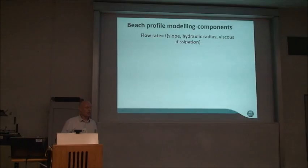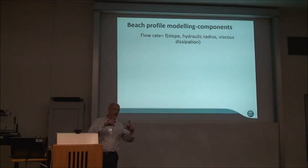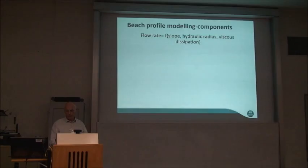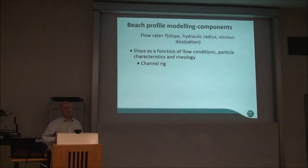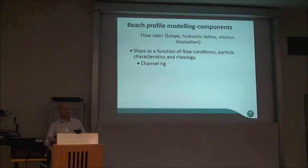In this channel model, flow rate is a function of slope and hydraulic radius. Because we're working with channels rather than pipes, we don't talk about pipe diameter — instead we talk about the ratio between the wetted perimeter and the frontal surface area of the flow. We look at viscous dissipation based on the rheological parameters of the material, and we need to measure slope as a function of flow conditions, particle characteristics — density, size, particle size distribution — and the rheology of the material.